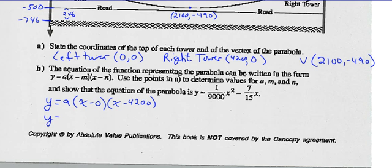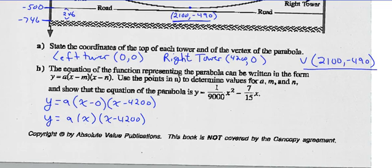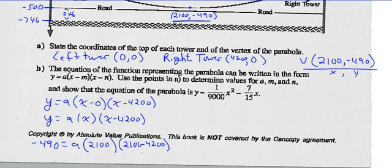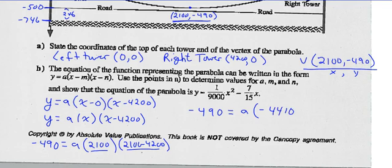Simplifying: y = a(x − 0)(x − 4200), which is y = a·x·(x − 4200). Now I substitute the vertex coordinates in for x and y. The y-coordinate is negative 490, equals a times 2,100 times (2,100 − 4,200). That's 2,100 times negative 2,100, which gives negative 4,410,000 times a. Dividing both sides: a equals negative 490 divided by negative 4,410,000.